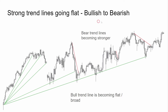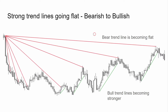Strong trend lines going flat — bullish to bearish. Bear trend lines becoming stronger as bull trend lines become flat and broad. See how the longer the bull trend goes, the flatter it gets. At one point bears actually do start making money — this ended up being a very deep pullback to a broader bull trend line. The same thing goes for the bears: it starts off very steep, but as the bulls step up it gets flatter and flatter, the bull trend lines become stronger, and the last bear trend line is almost the high of a range.